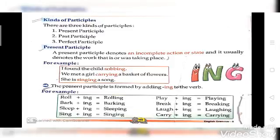It is a very important point: जब आप present participle form करते हैं, then आपको ing add करना होता है verb के साथ, then only you can form present participle. Example: roll + ing = rolling, bark + ing = barking, sleep + ing = sleeping, sing + ing = singing, play + ing = playing, break + ing = breaking, laugh + ing = laughing, carry + ing = carrying.